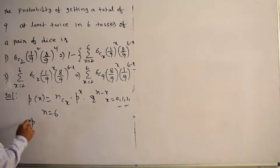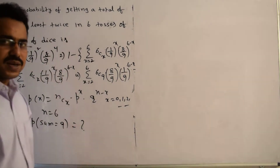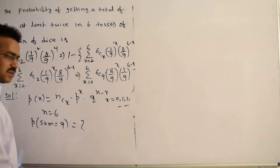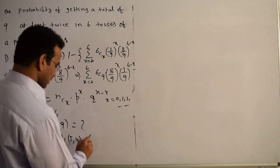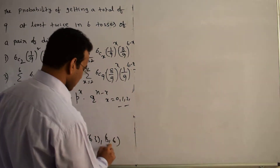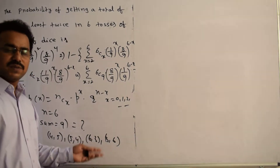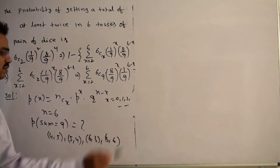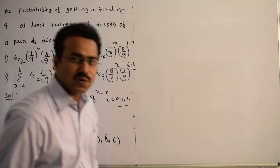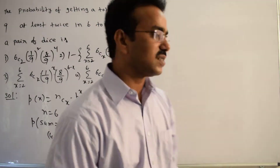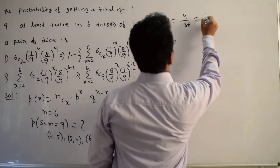We need to calculate the probability of getting a sum of 9 when 2 dice are thrown. The possible outcomes are: (4,5), (5,4), (6,3), and (3,6). There are no other possibilities — (2,7) is not valid. So the total number of favorable cases is 4, and total outcomes when 2 dice are thrown is 36. Therefore, P(sum = 9) = 4/36 = 1/9.